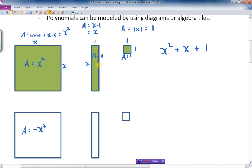The next one, the area equals negative x. And the last one, the area equals negative 1. So this polynomial would look like this: negative x squared minus x minus 1.